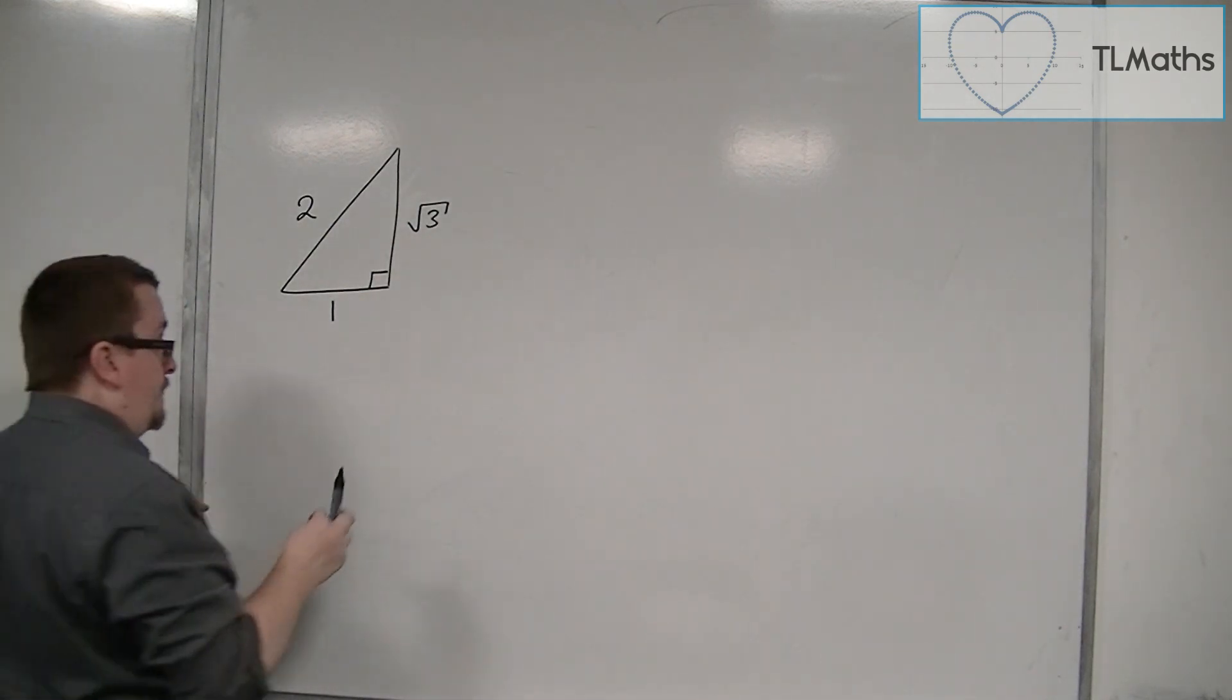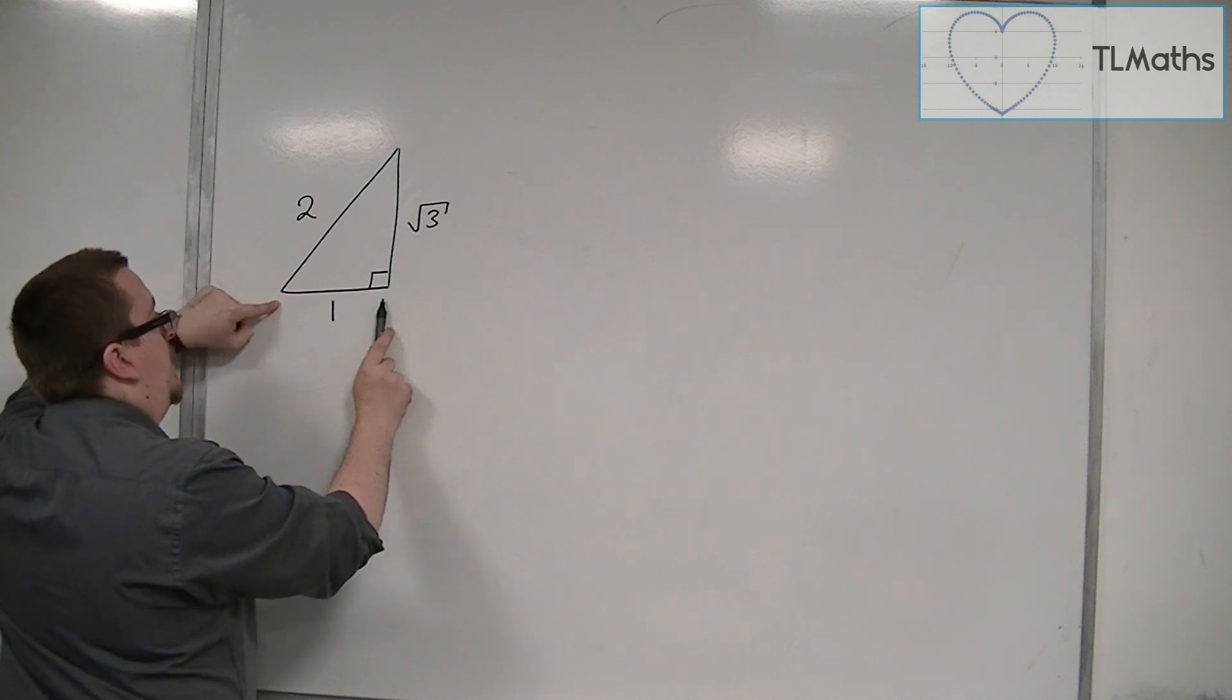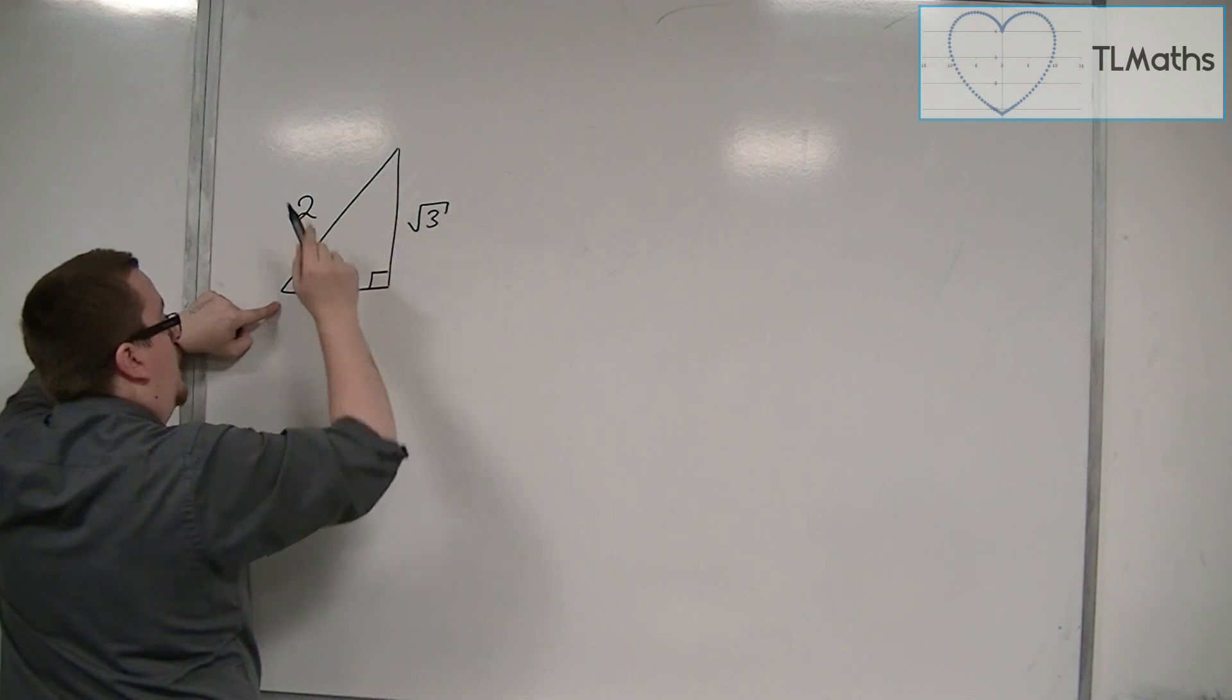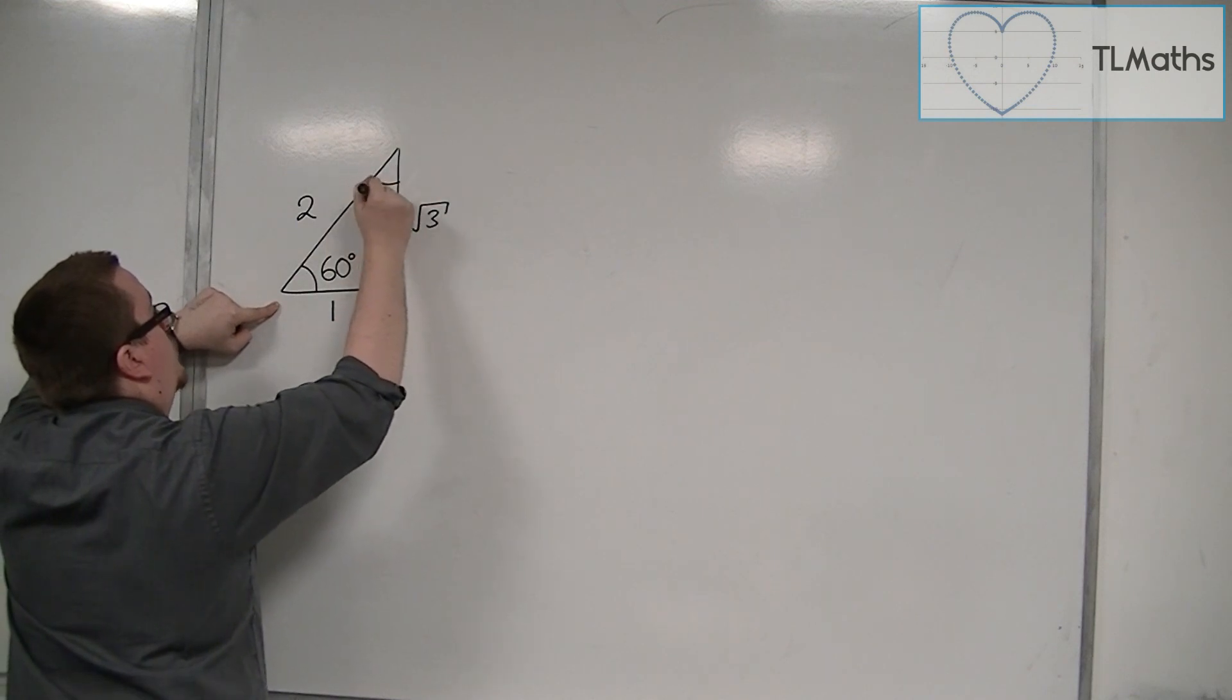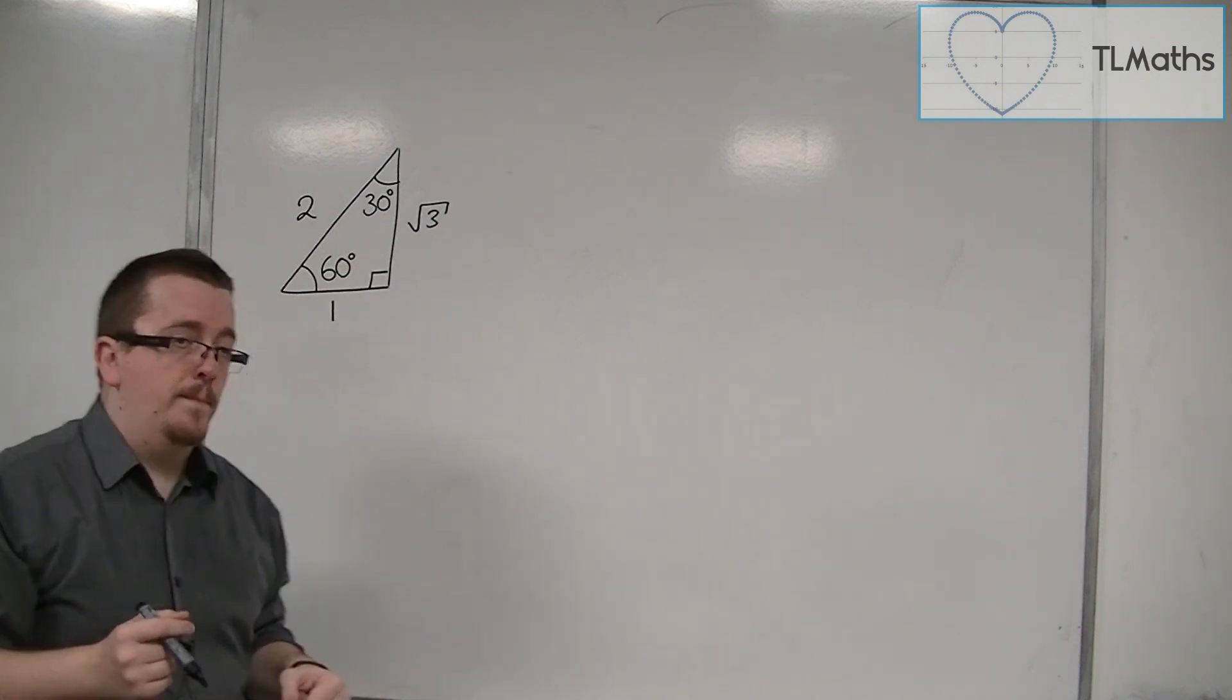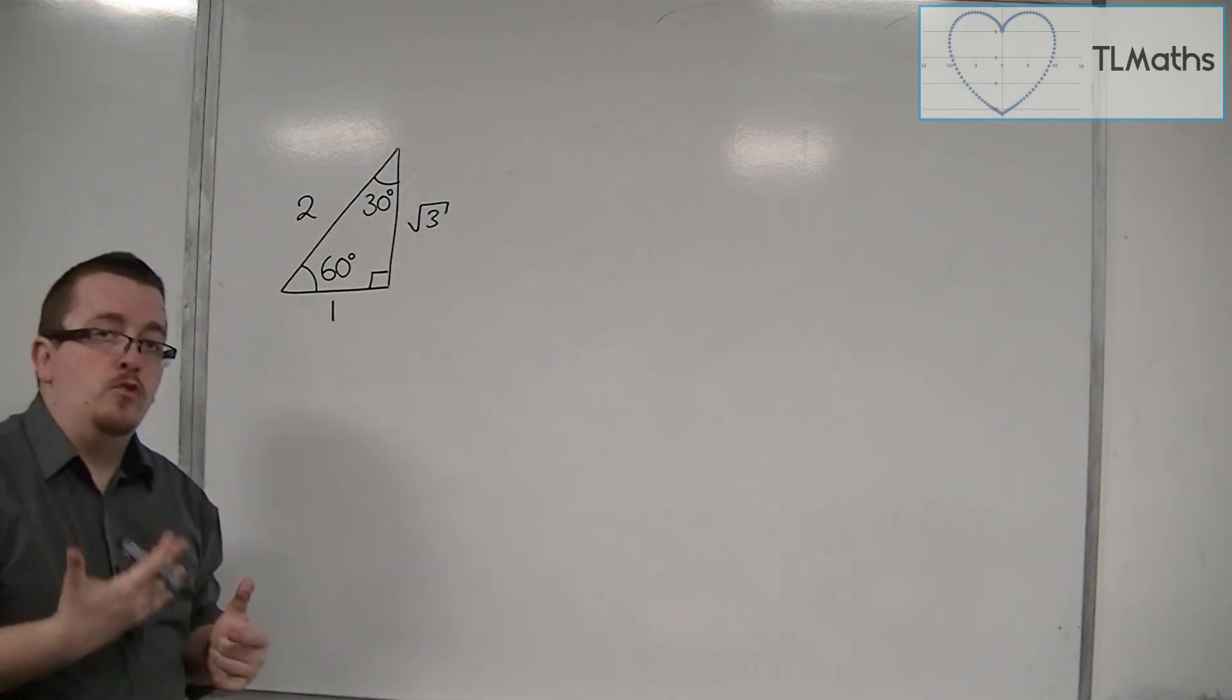Now, because that side is shorter than root 3, this angle will be larger than that one. So this one is the 60-degree angle, and this is the 30-degree angle. So 1, 2, root 3, and 60 and 30. That's what it would be in degrees.